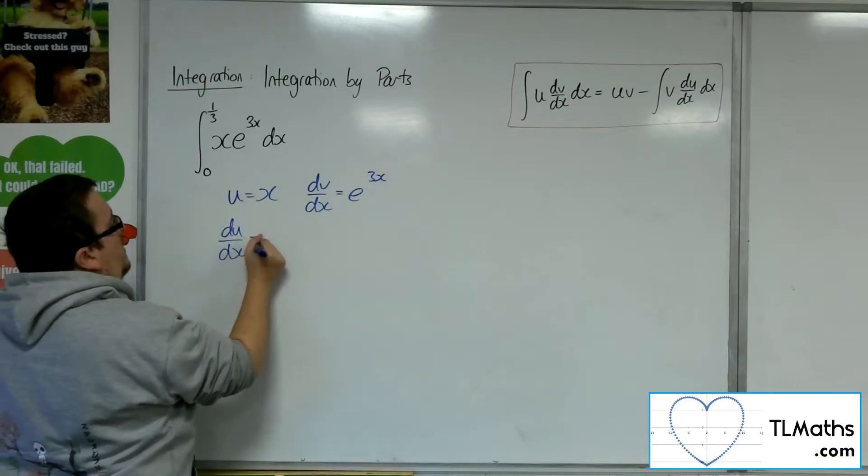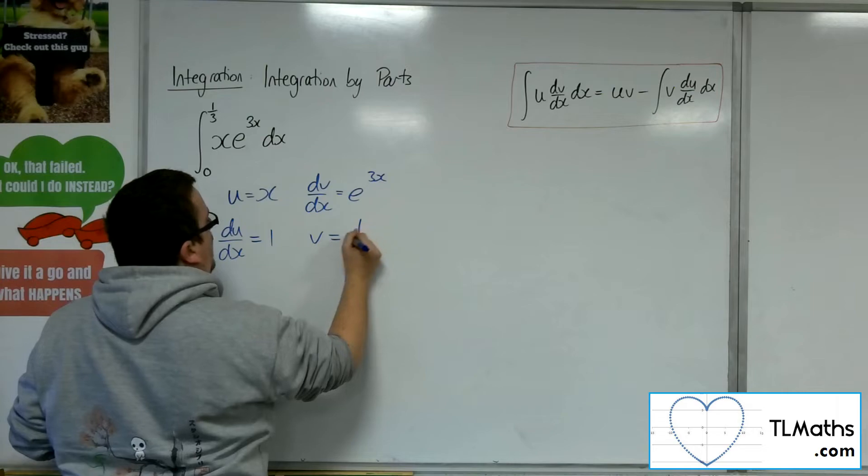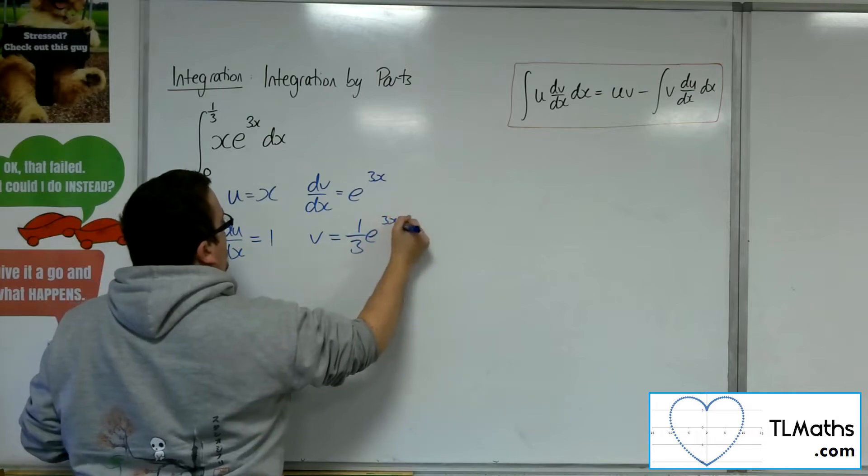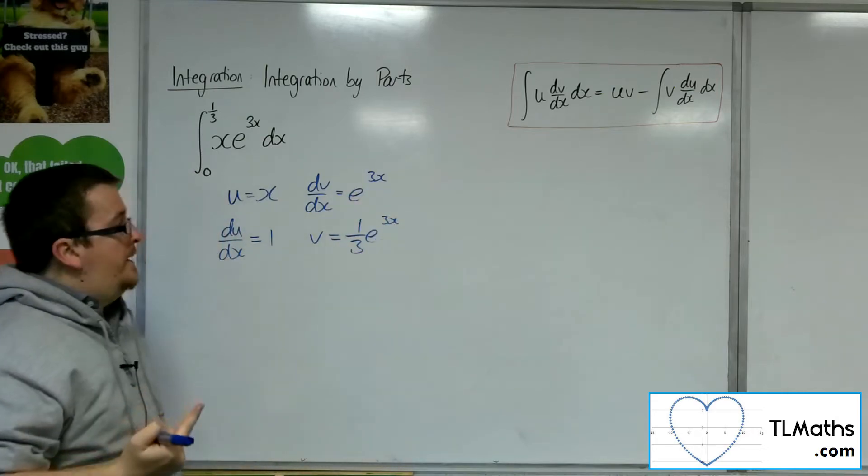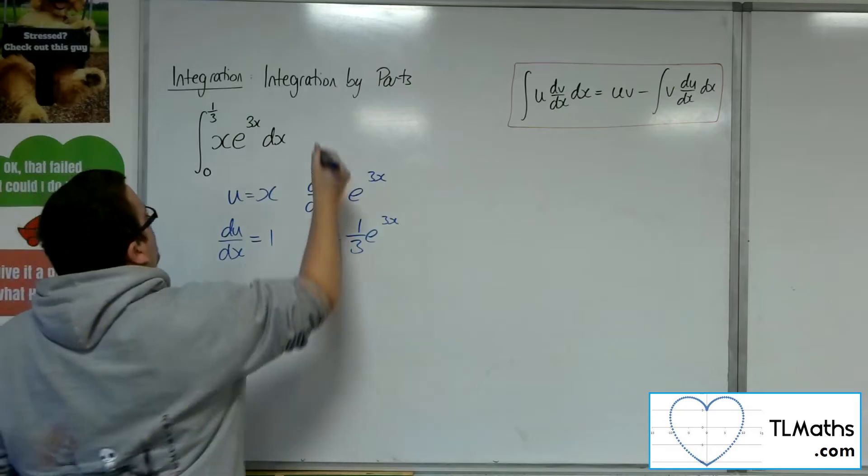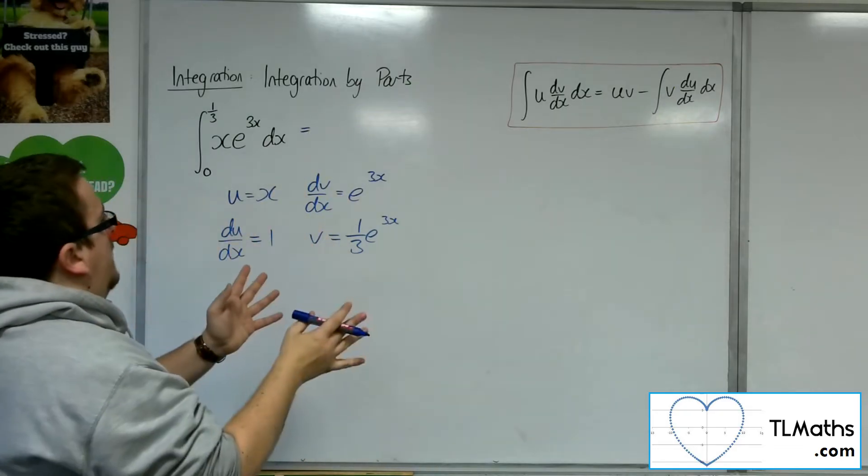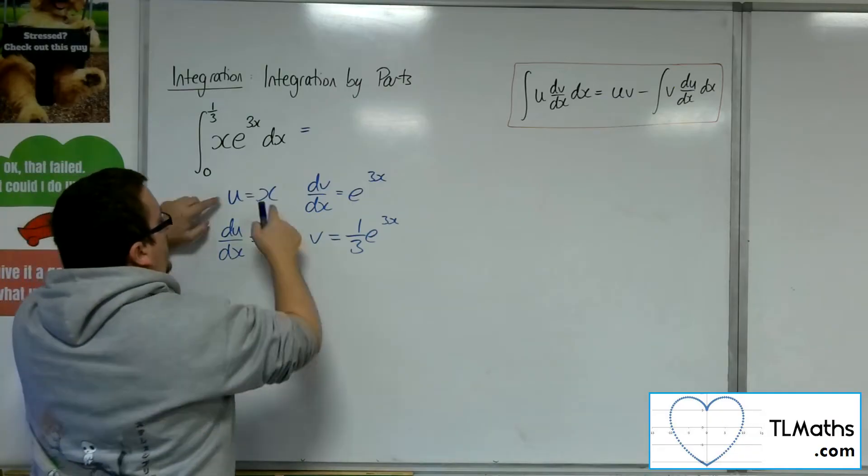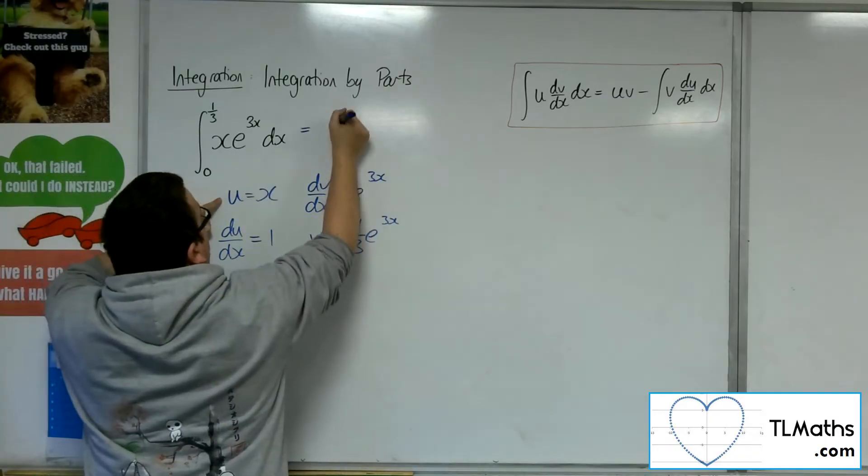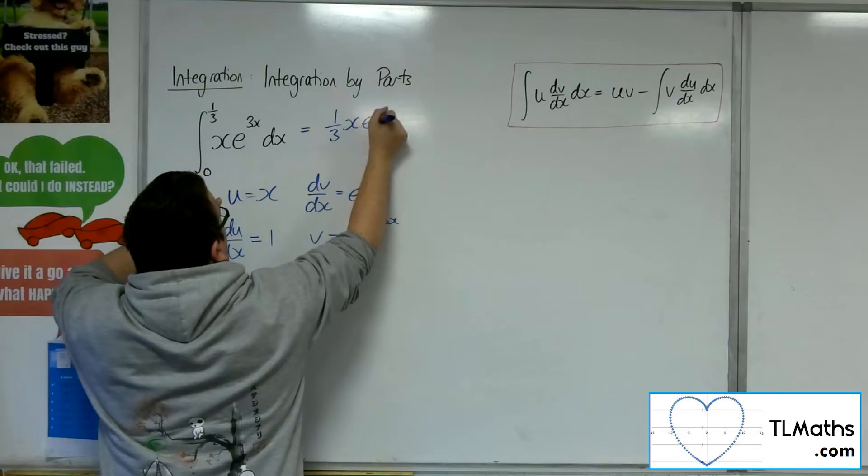So du/dx will be 1, and v will be 1/3 e to the 3x. So we're integrating, remember. Using the formula, we've got u times v, so x times 1/3 e to the 3x.